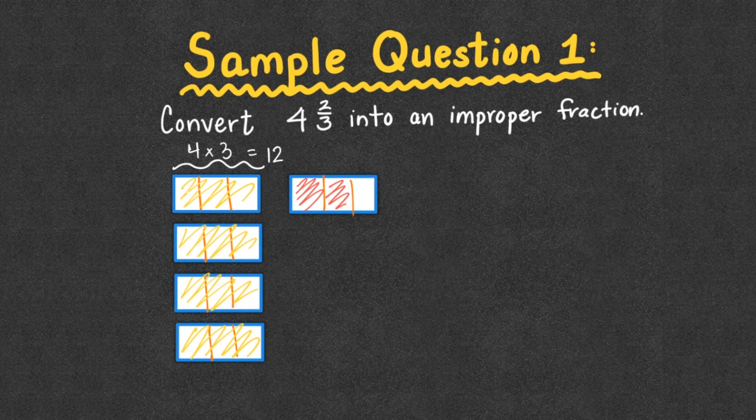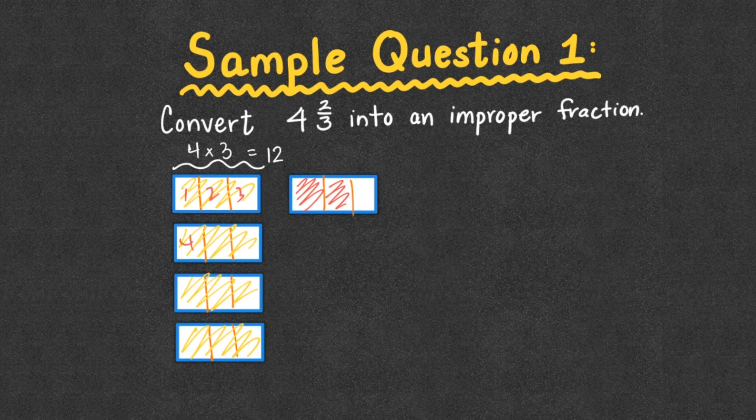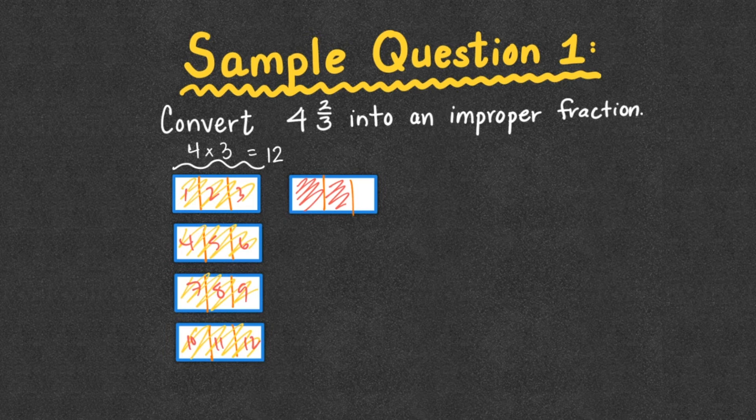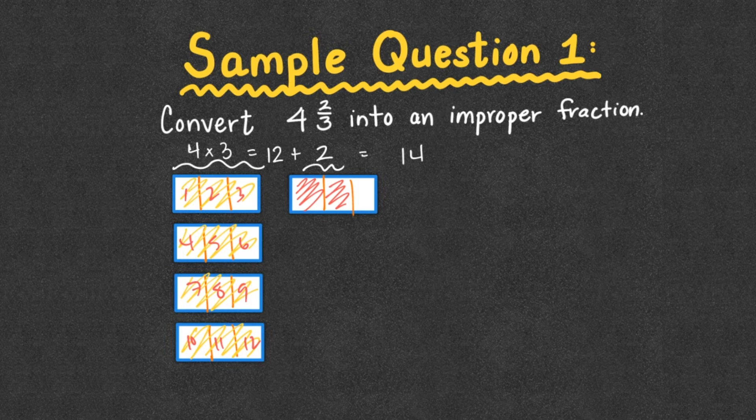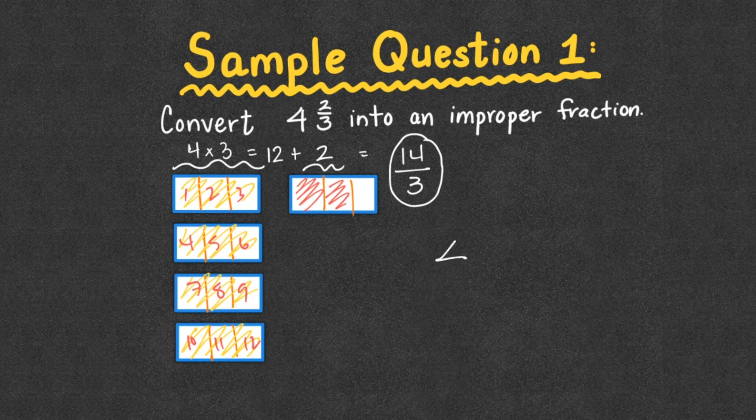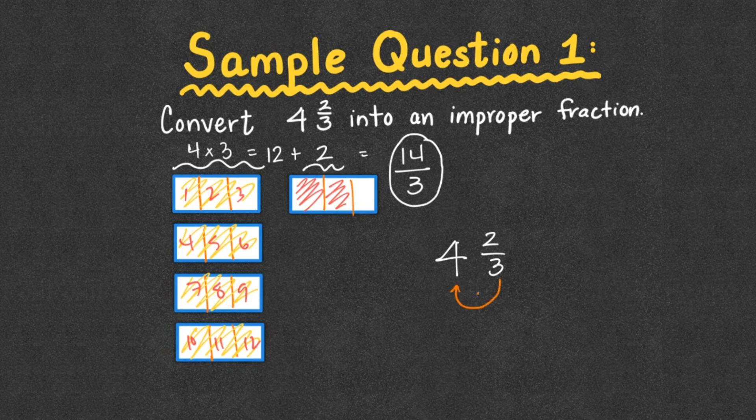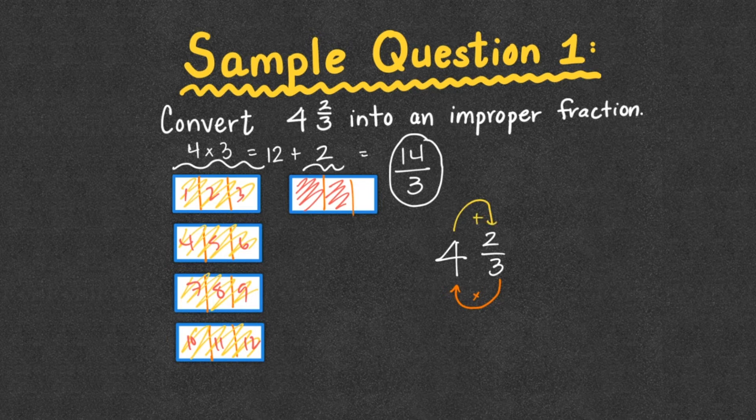You could count: 1, 2, 3, 4, 5, 6, 7, 8, 9, 10, 11, 12. But then we add these 2 pieces that we have here, which is equal to now 14 pieces. But 14 of what size? They're all thirds. So it would be 14 thirds. Again, if we were going to do the shortcut, instead of having to draw it out, we would do 3 times 4, which gives us 12. Add on the 2 extras, which gives us 14. And we get 14 thirds.